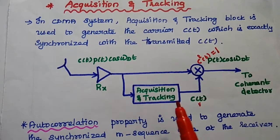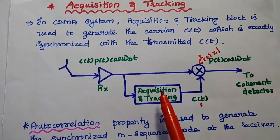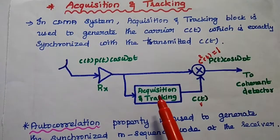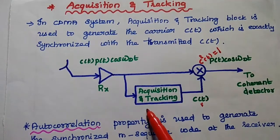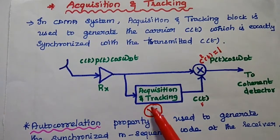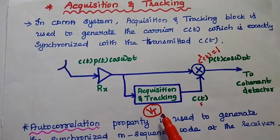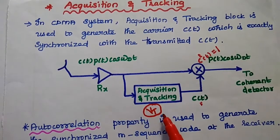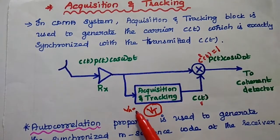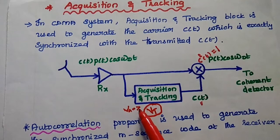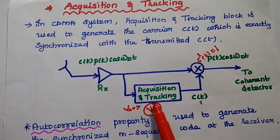This acquisition and tracking block is very important in the CDMA receiver. There are two important operations: acquisition and tracking. These two operations are based on the threshold voltage VT, which is the predetermined threshold required for synchronism. Whenever the average voltage in the acquisition block is greater than VT, we select the tracking operation. If it is less, we proceed with acquisition.